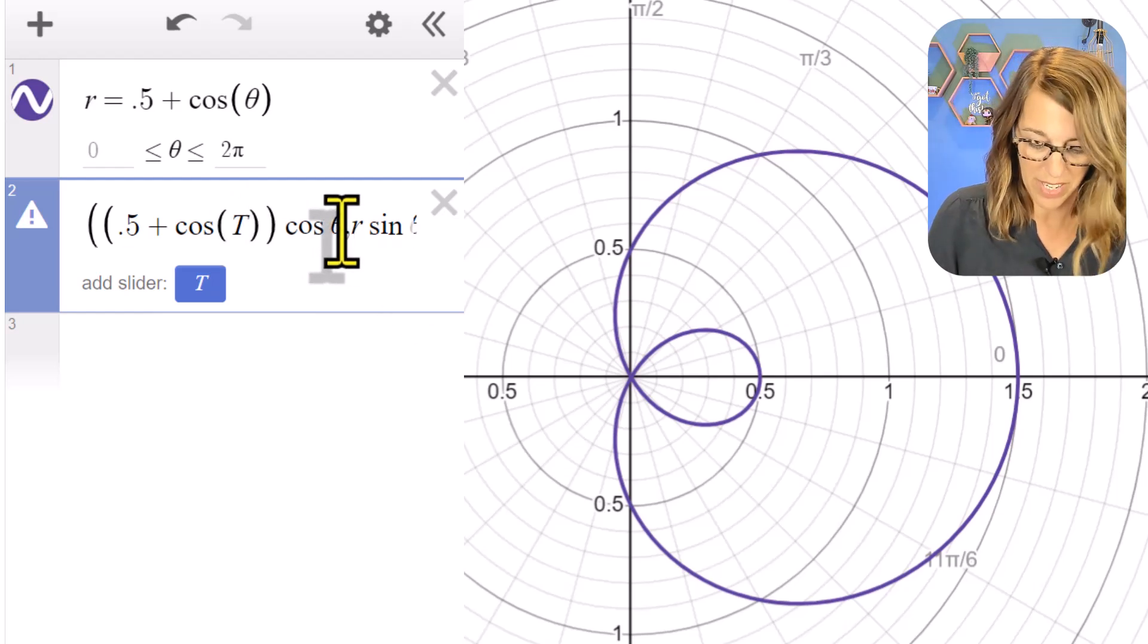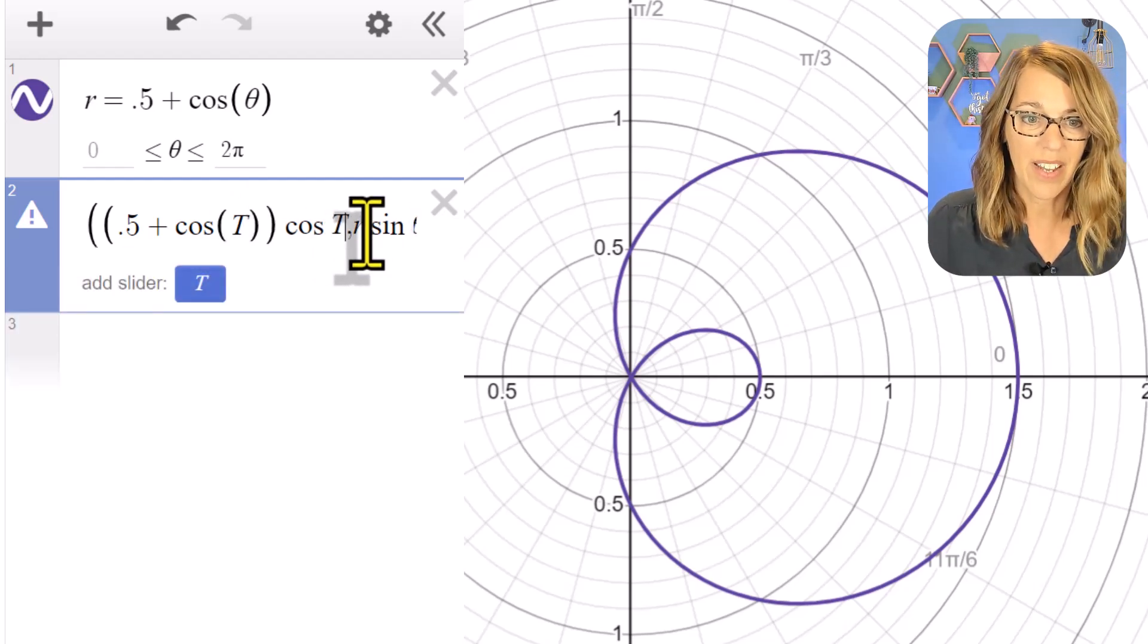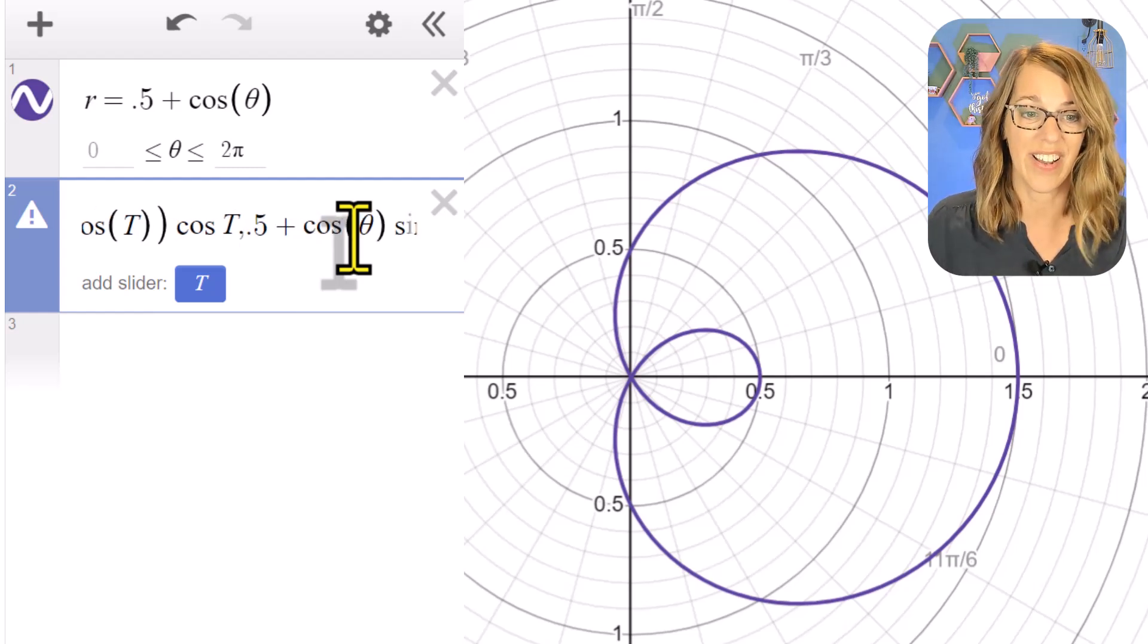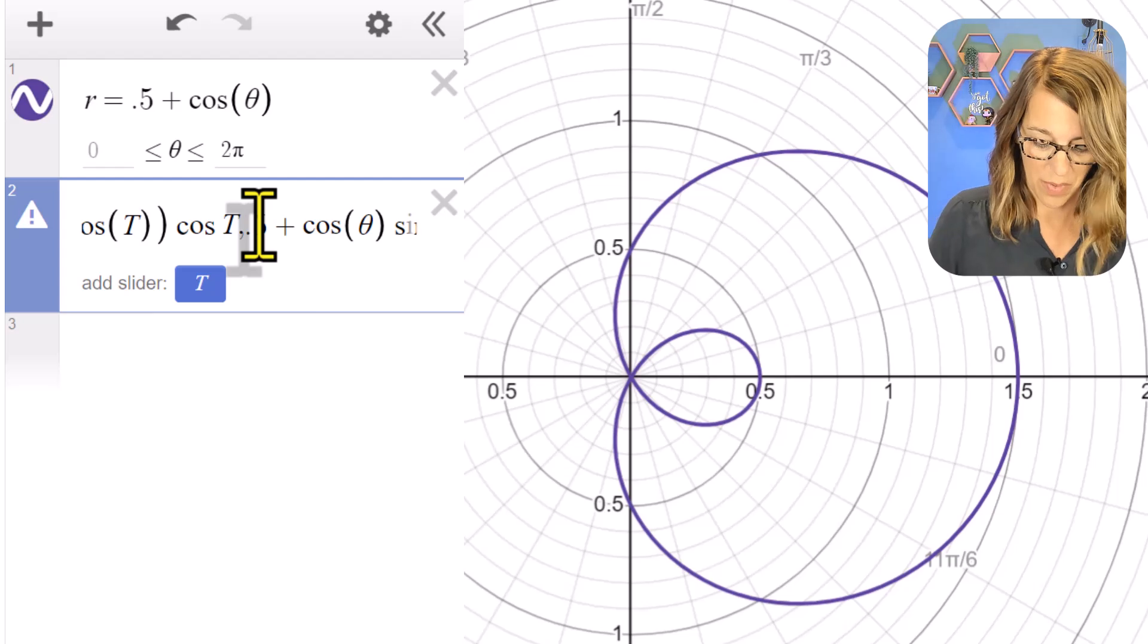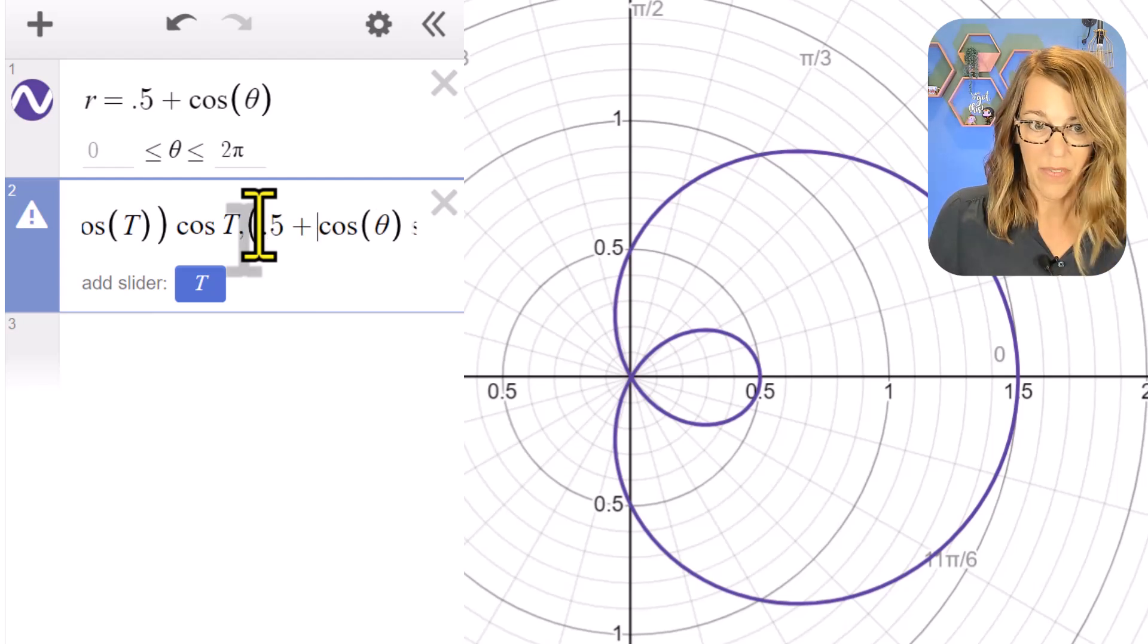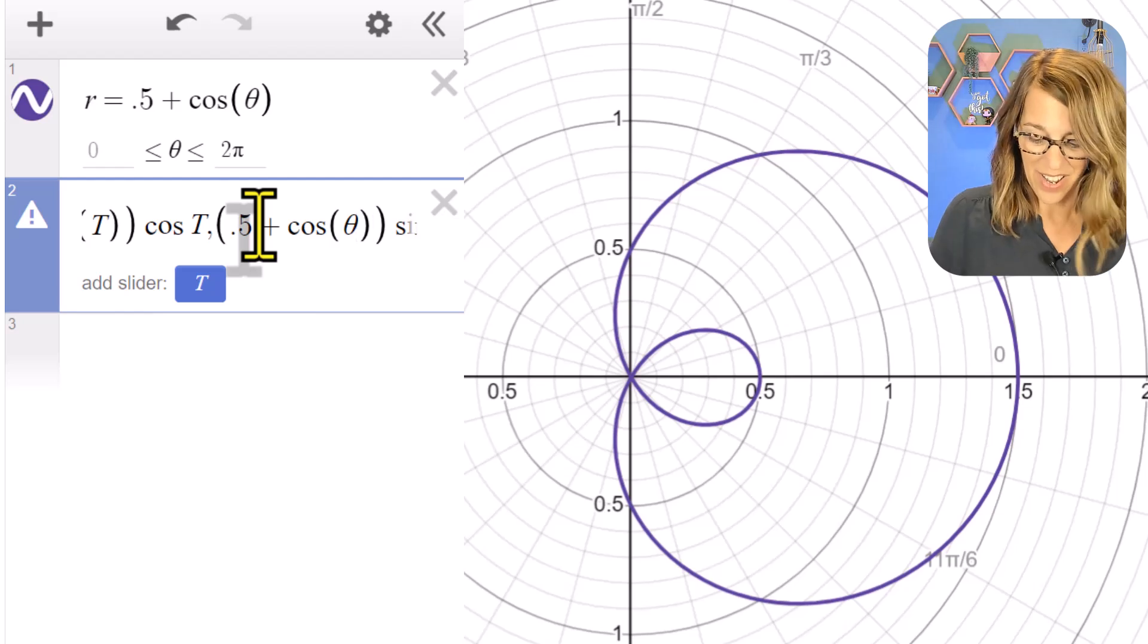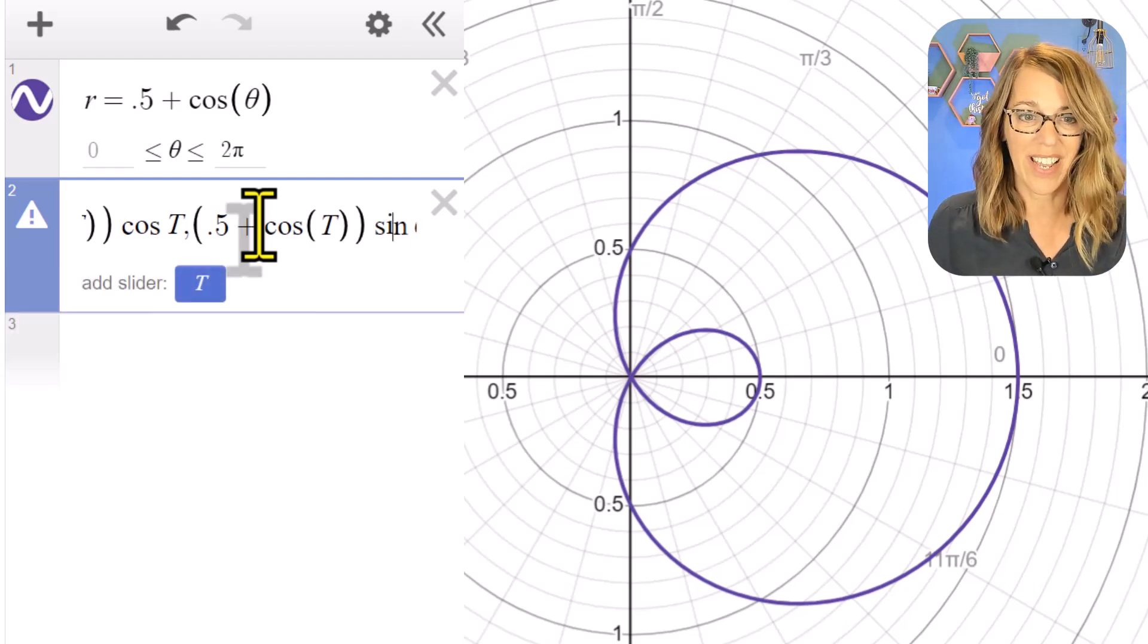Wherever I see a theta, I'm going to replace that with a T. And I've got r here again—my r was still copied—so I'm going to do a Ctrl+V to get my r in there, and then let's put some parentheses around that. So I've got my function's value for r in parentheses, and I'm going to replace theta with a capital T so I can use that slider.